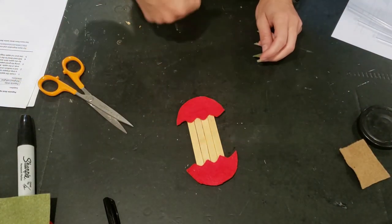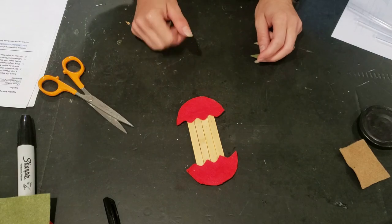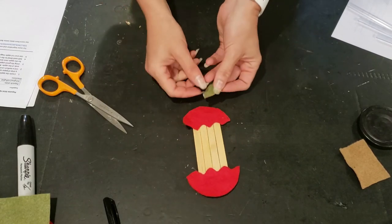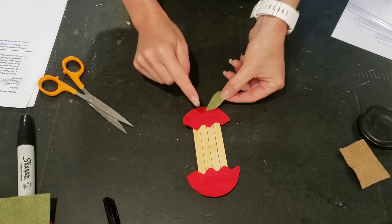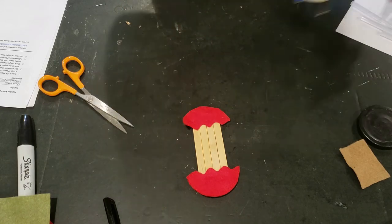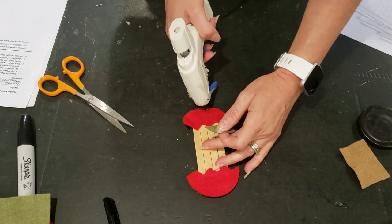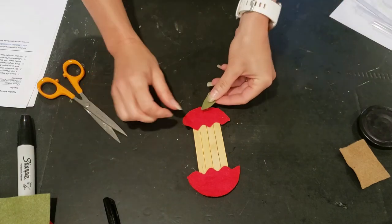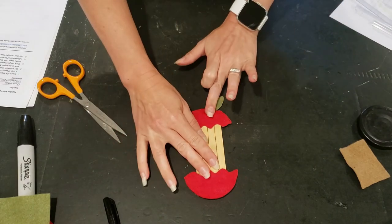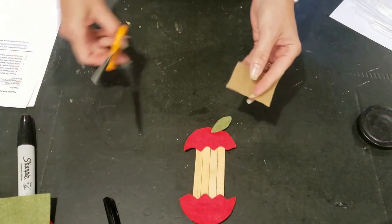Okay, now you need to pick which is your top and which is your bottom. I think this one looks more like the bottom to me, so I'm going to go ahead and stick my leaf coming out from the top. Just a little dot of glue, add my leaf, and now I'm going to make my little apple stem.